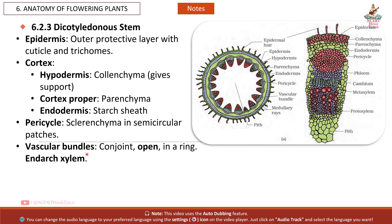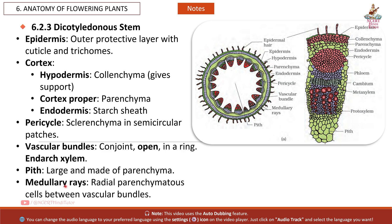In the dicot stem, vascular bundles are conjoint, open, and arranged in a ring. The xylem is endarch. The pith is large and made of parenchyma. Medullary rays are radial parenchymatous cells found between the vascular bundles.